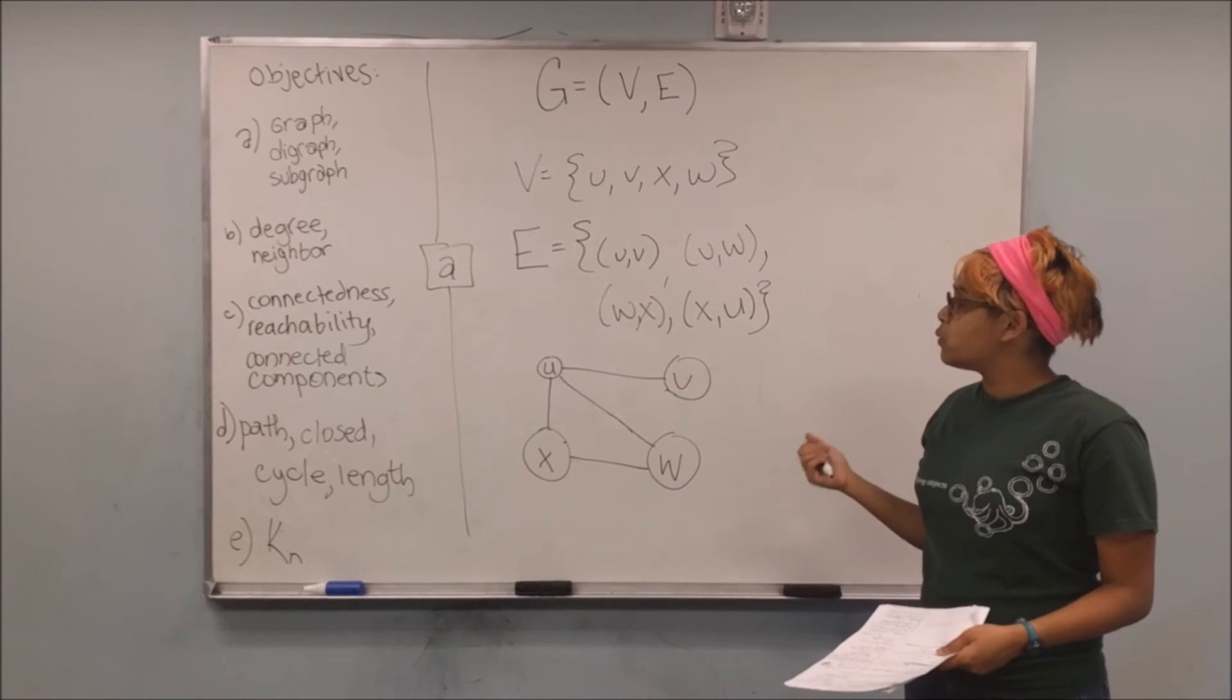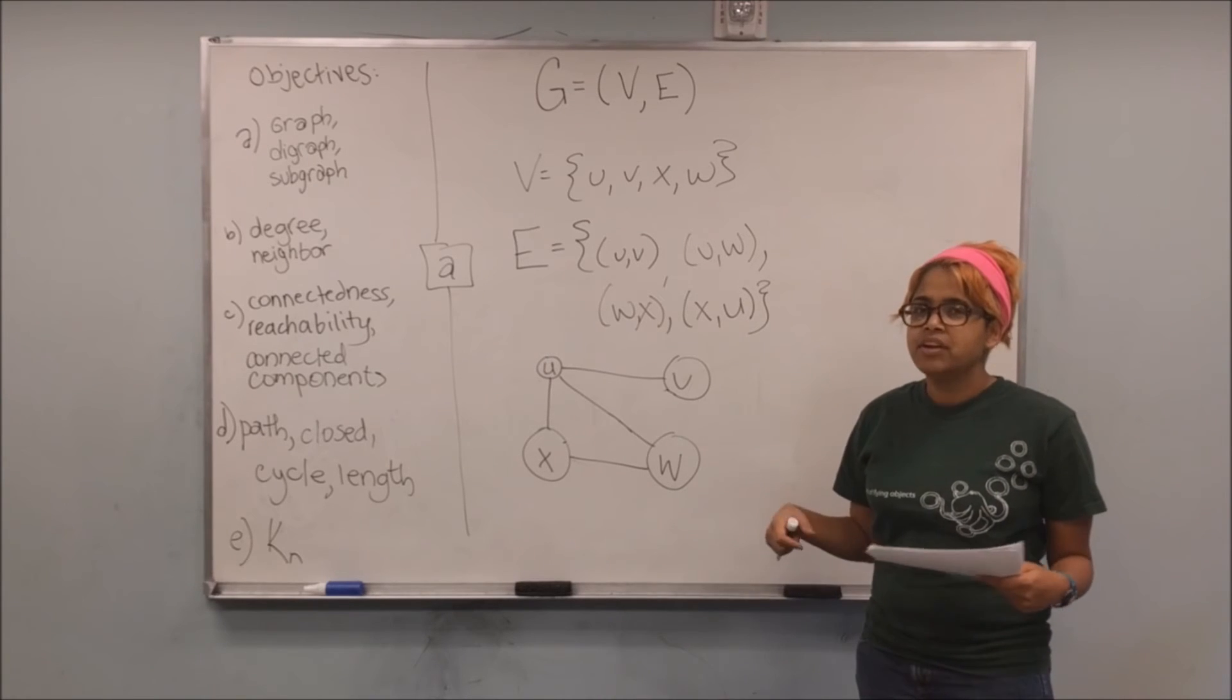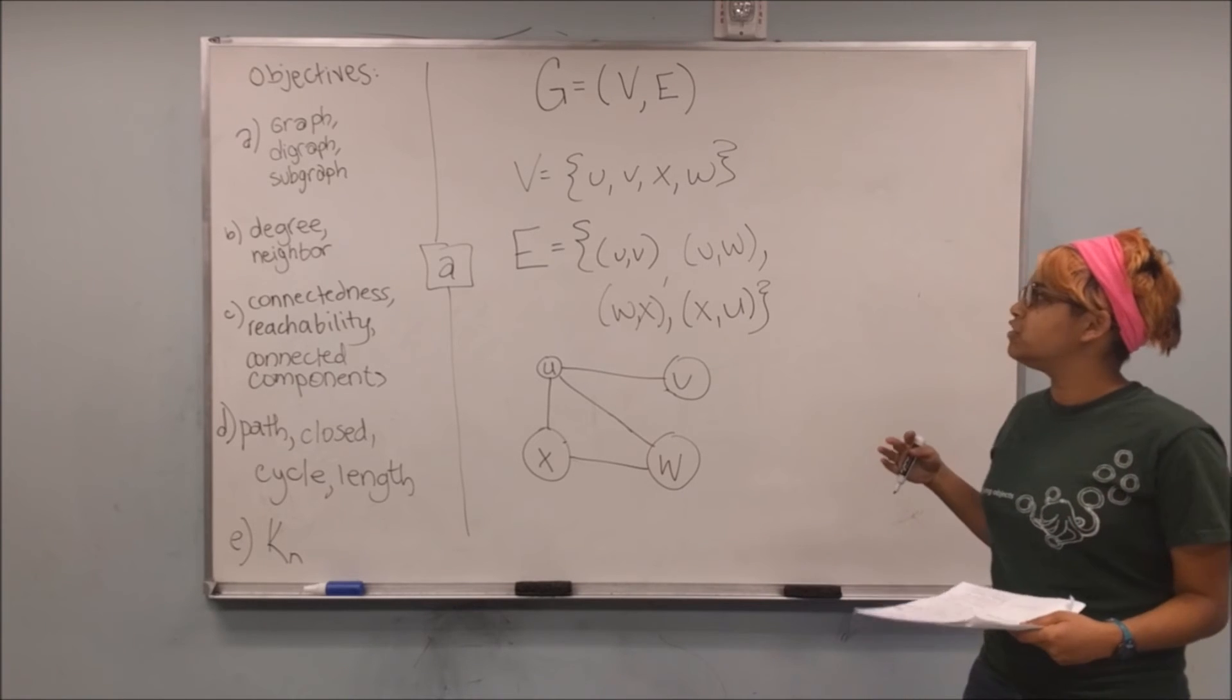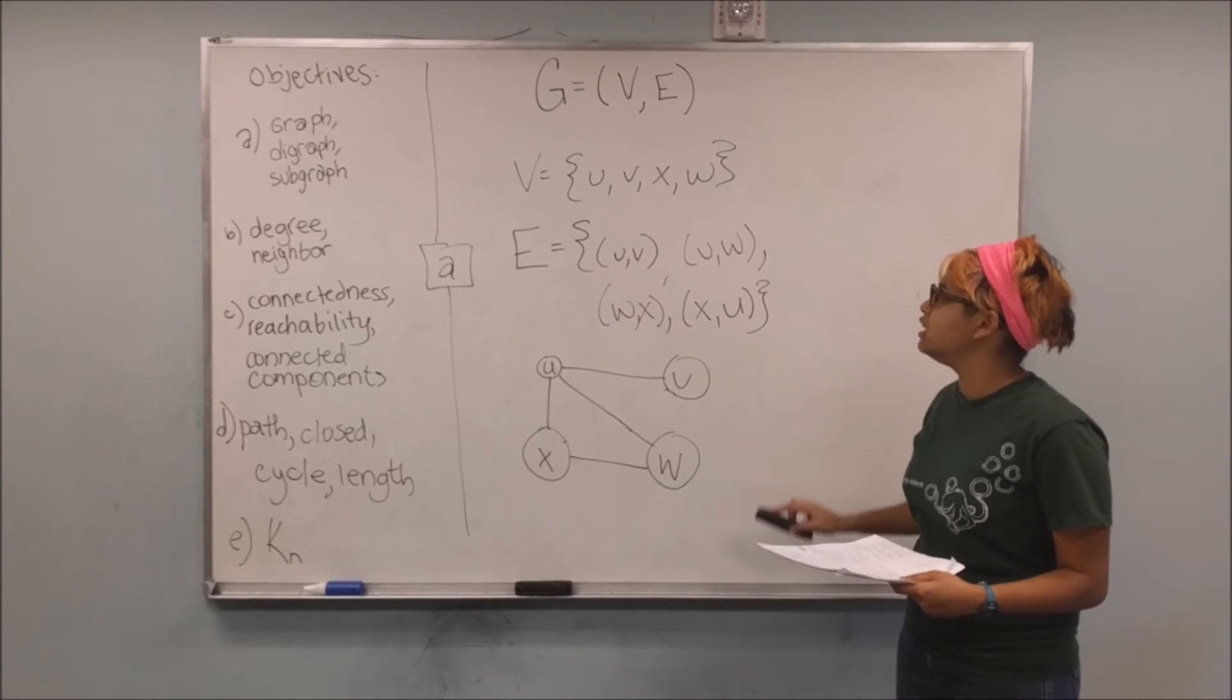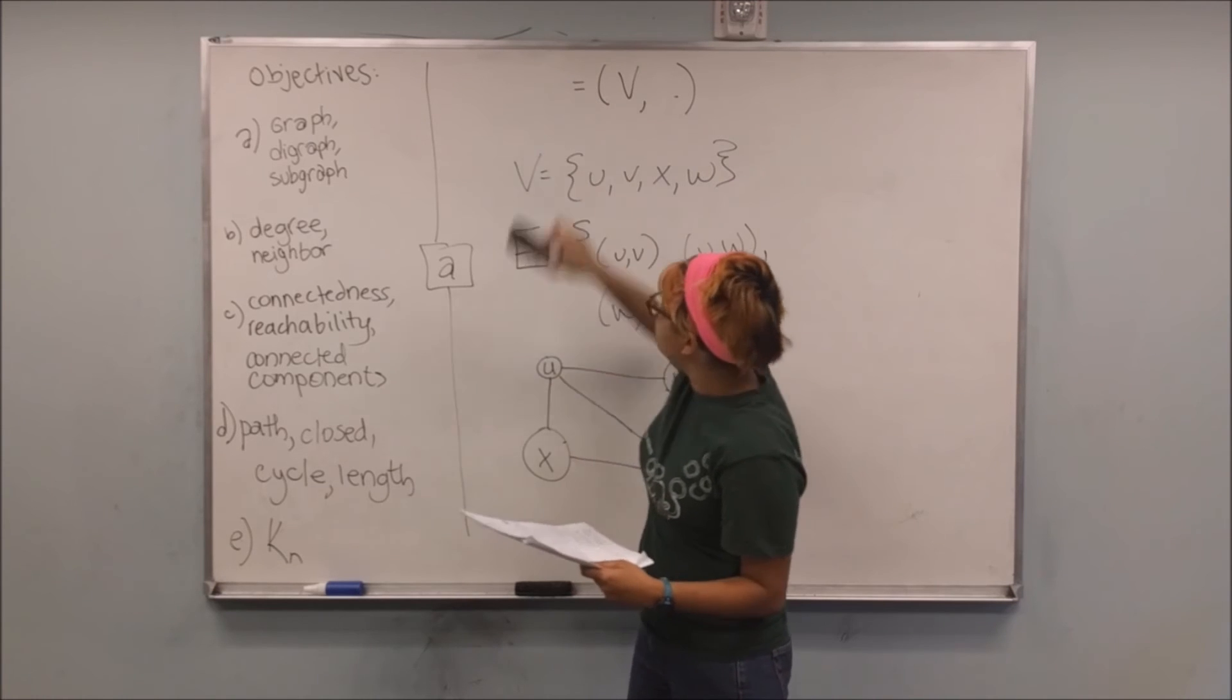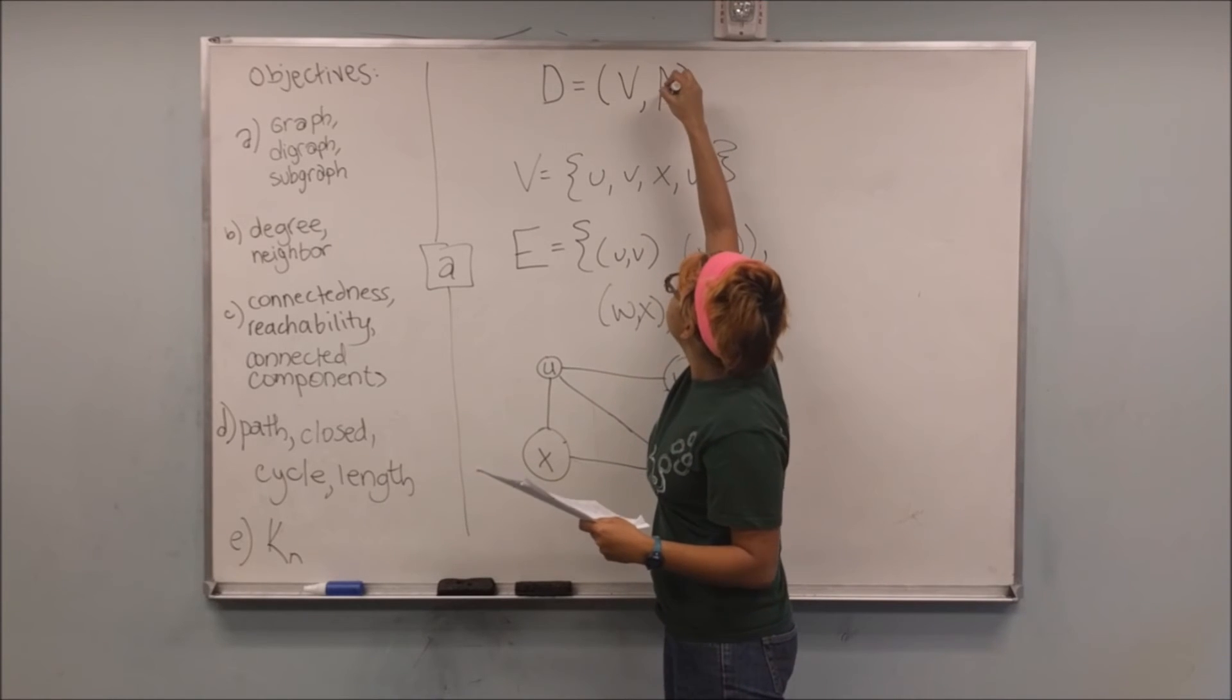Alright, and that is a graph in which the order does not matter. Now, I might instead want to have a digraph or a directed graph. And the digraph is exactly the same, only in this case the pairs are ordered. So just to make that clear, I'm going to say, okay, instead I'm going to name my graph D, V is going to remain the same, but I'm going to change this to A.